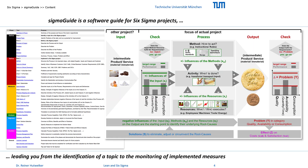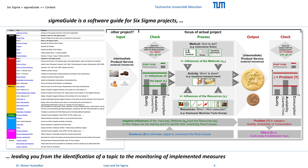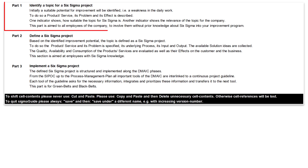SIGMAGUIDE is based on the process problem-solving model introduced in the previous module. It is divided into three parts. In part 1, a topic for a SIGMAGUIDE project is identified. This part is aimed at all employees of the company who want to be involved in the improvement of the company's processes without prior knowledge of SIGMAGUIDE. An observed weakness of the process can first be briefly described and then further detailed, summarized into a final statement about the project topic. The suitability of the topic for a SIGMAGUIDE project is evaluated in an index, and another indicator shows the relevance of the topic for the company.